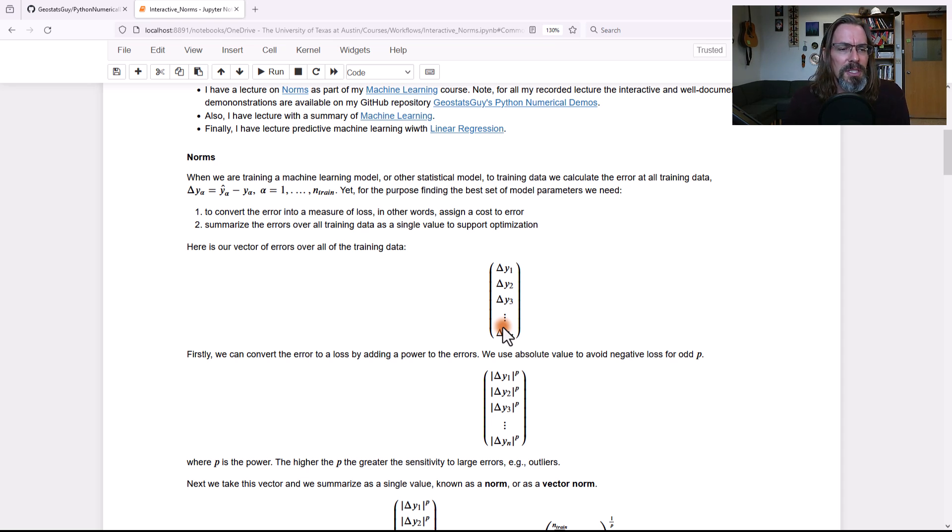OK, so what are norms? How do norms have anything to do with this? Well, let's calculate our error over our alpha equals 1 through n training. We're going to have errors at every one of those observations. So as we're fitting the model, you can imagine there's going to be some delta in y, which will be the model prediction minus the true value. Y hat is our prediction. Y is our true value. And that's the error.